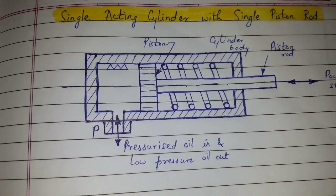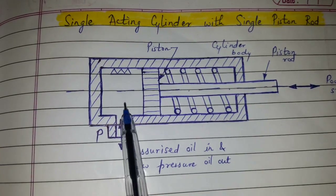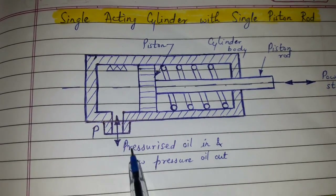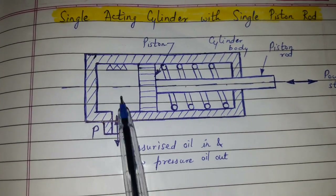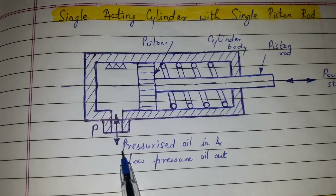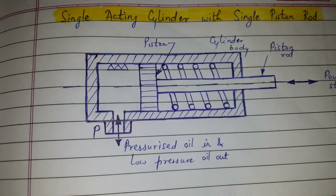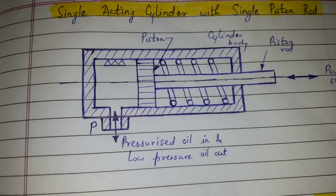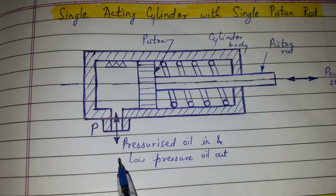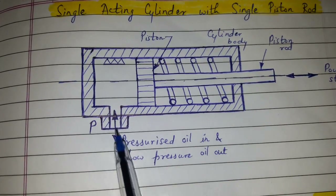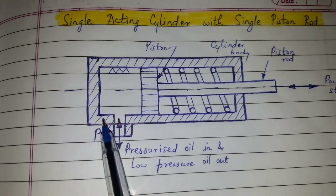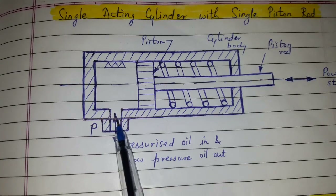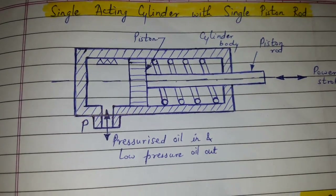During this movement of the piston, used oil is pushed through port P and the oil will return to the oil tank via filter. Again, the pressurized oil enters into the cylinder through port P and the cycle repeats.